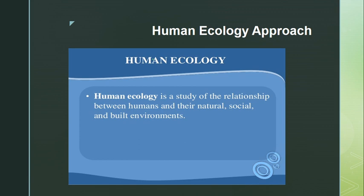Now let's try to know more about the human ecology approach. Human ecology is a study of the relationship between humans and their natural, social, and built environments. There is a conclusion that if there are too many people, it can destroy our natural environment, our social environment, and our built environments, because the environment can no longer sustain that level of consumption.